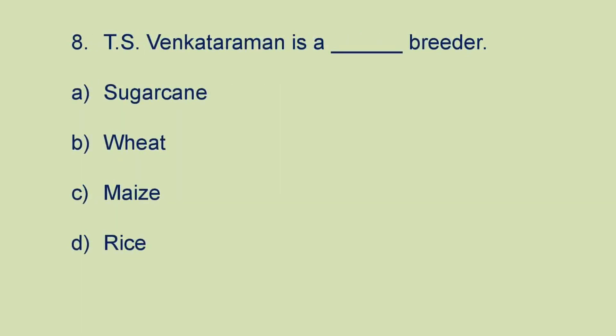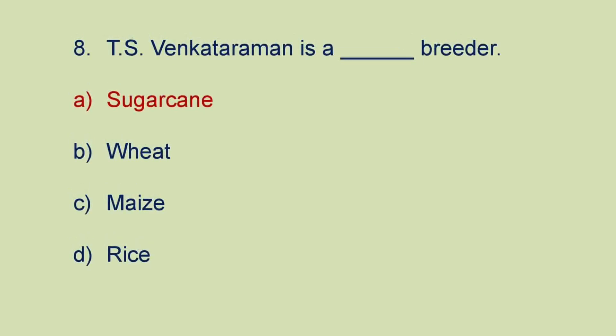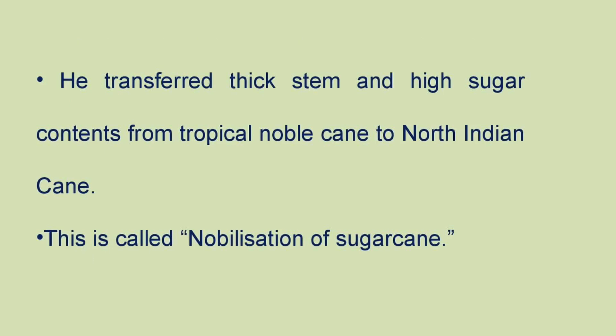Next question: TS Venkatraman is a breeder of which crop? A) sugarcane, B) wheat, C) maize, or D) rice. The answer is he is a sugarcane breeder. TS Venkatraman transferred thick stem and high sugar contents from tropical noble cane to North Indian canes. This is called nobilization of sugarcane.